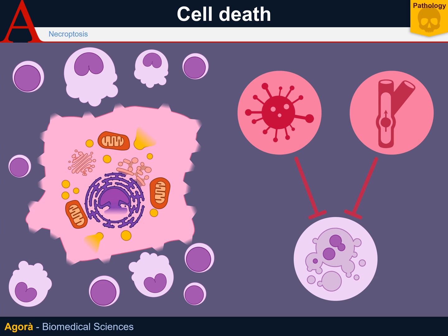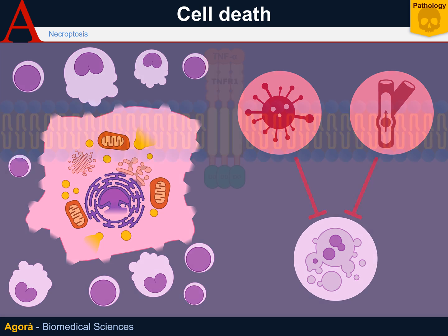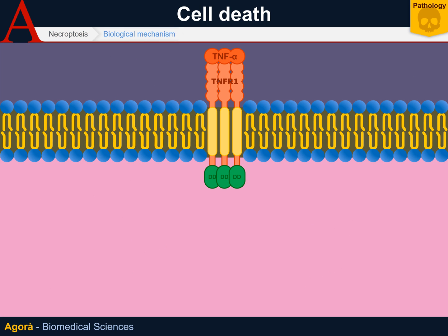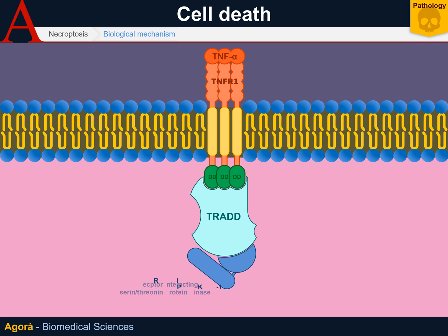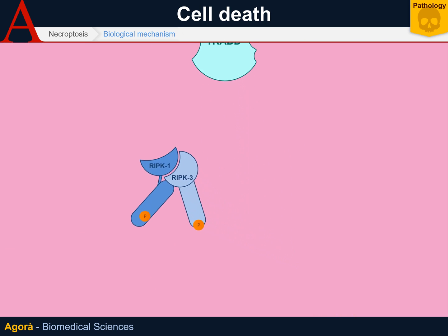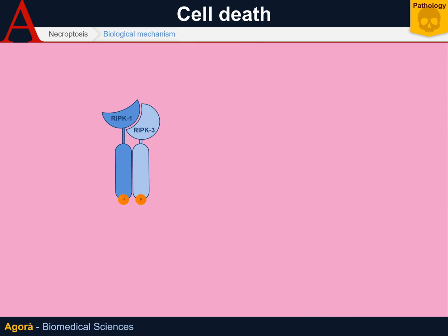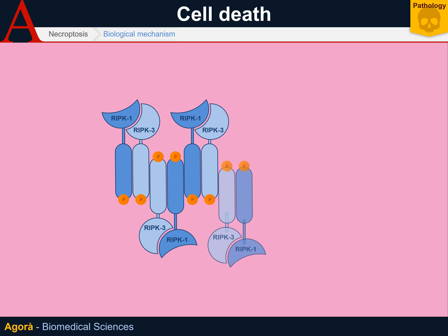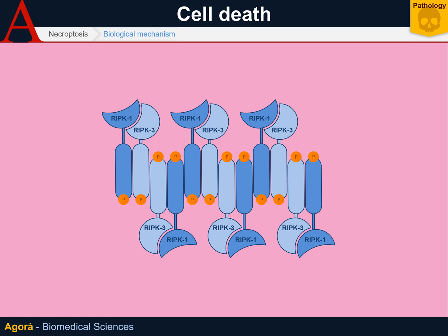The arrival of inflammatory cells will allow an efficient response against the virus. Necroptosis is triggered by TNF receptor 1 through its interaction with TRADD, which will attract RIPK1. This molecule is a kinase and it attracts RIPK3. The two of them phosphorylate each other and, once phosphorylated, they detach themselves from TRADD and form a dimer. More RIPK1 and RIPK3 dimers get together.